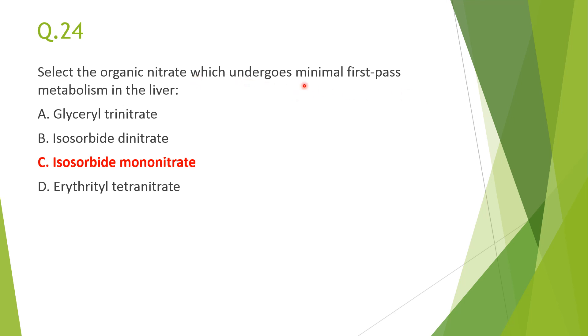Question 24: the organic nitrate that undergoes minimum first-pass metabolism in the liver is isosorbide mononitrate — the sure-shot answer, with little first-pass metabolism.